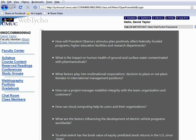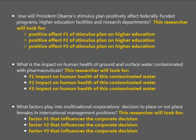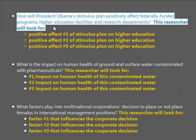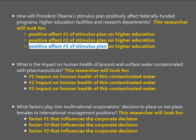Once you have a good research question, one of the things you'll find is you can clearly break down exactly what it is you should be looking for when you're doing that research. For example, in this first question — how will President Obama's stimulus plan positively affect federally funded programs, higher education facilities, and research departments? — clearly, everything this researcher is going to look for must be a positive effect of the stimulus plan: positive effect number one, positive effect number two, positive effect number three.